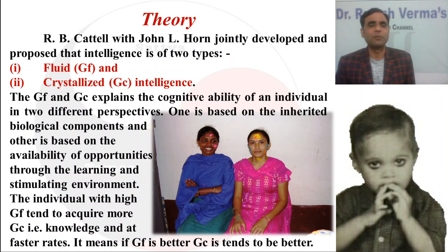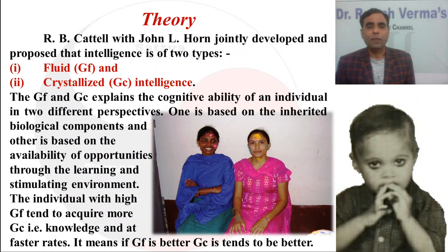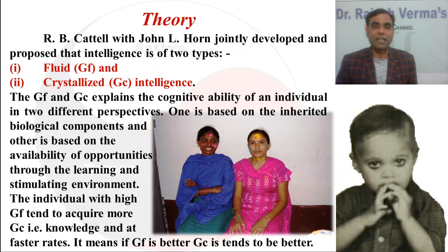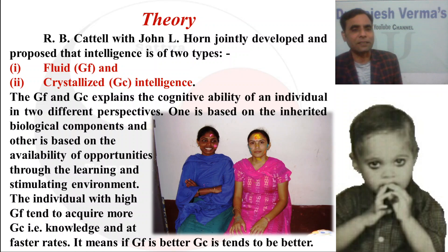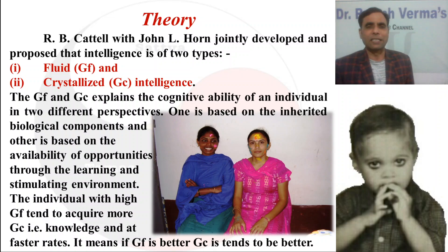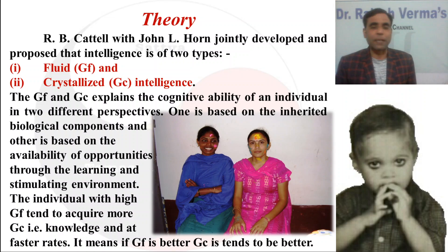The individual with high GF — fluid intelligence — tends to acquire more GC. This means crystallized intelligence is the subset of fluid intelligence. As Cattell and Horn said, fluid intelligence is the inborn, innate, or biological capacity. This is akin to the general factor suggested by Charles Spearman. An individual who has a high level of GF tends to acquire a high level of crystallized intelligence — that is, knowledge — at a faster rate.